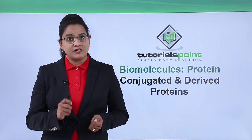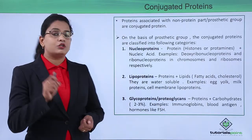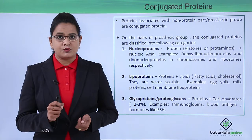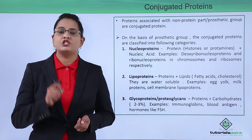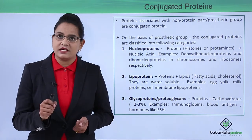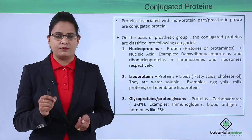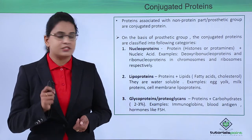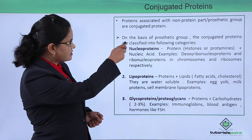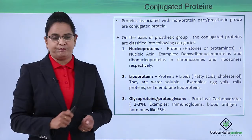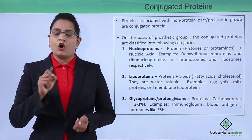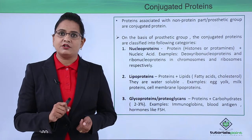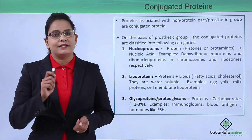First, conjugated proteins. Conjugated proteins are those proteins which are associated with a non-protein part. That non-protein part is known as the prosthetic group. On the basis of what prosthetic group is present in the protein, they are of the following categories.